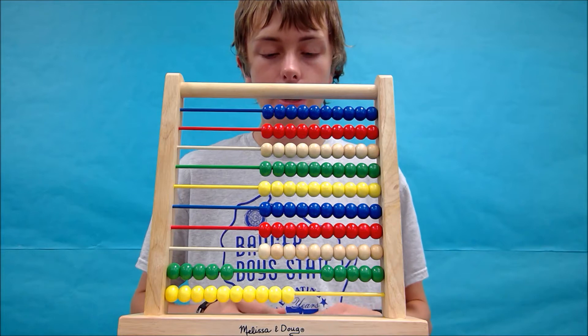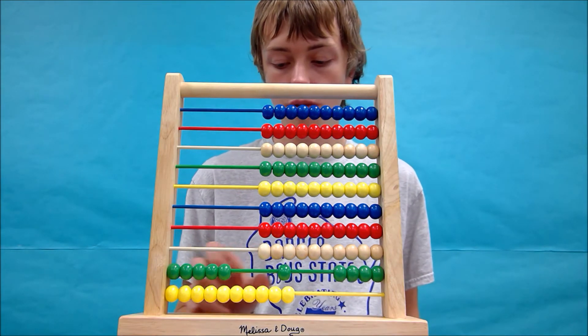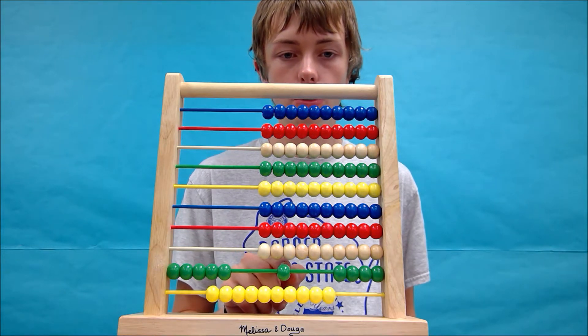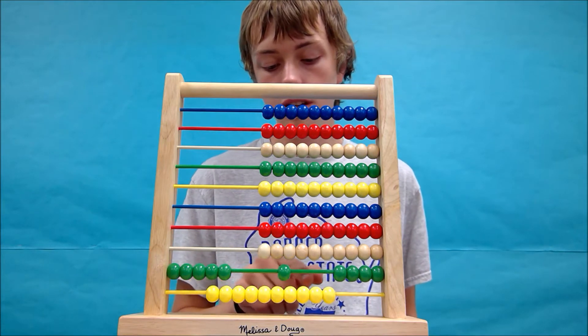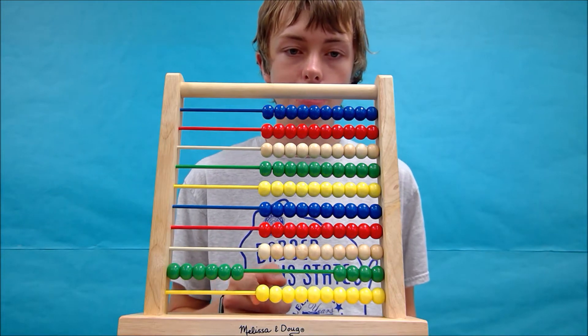In the corner of my paper, I can move one 10 bead over because one bead from the 10 row, the tens row, the green's row, equals 10 yellow beads. So if I move one green bead over, I can move the 10 yellow beads back.